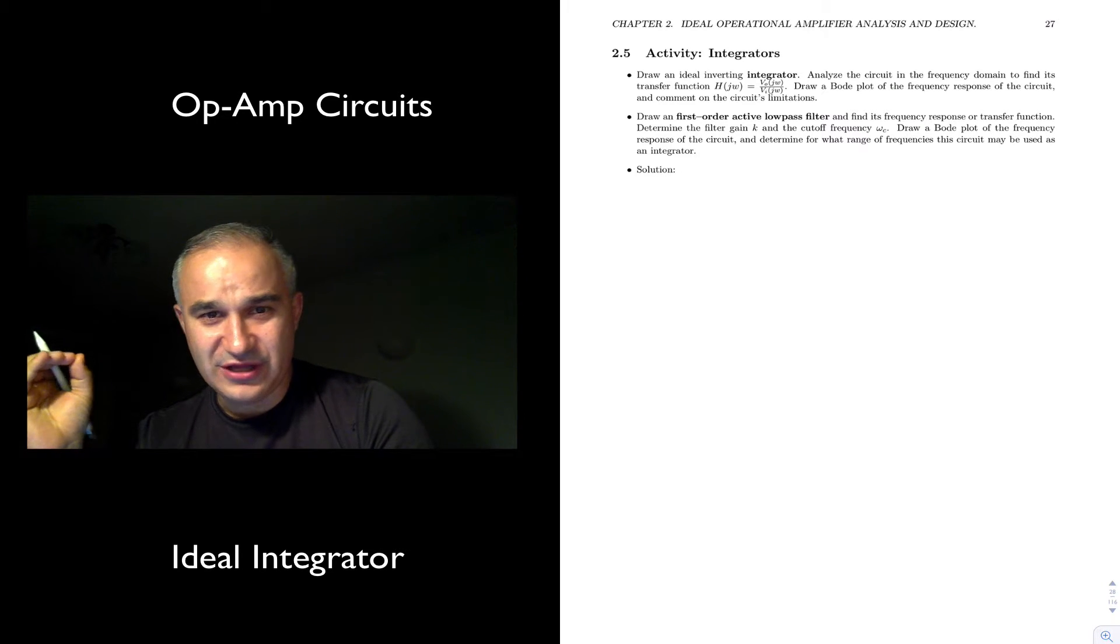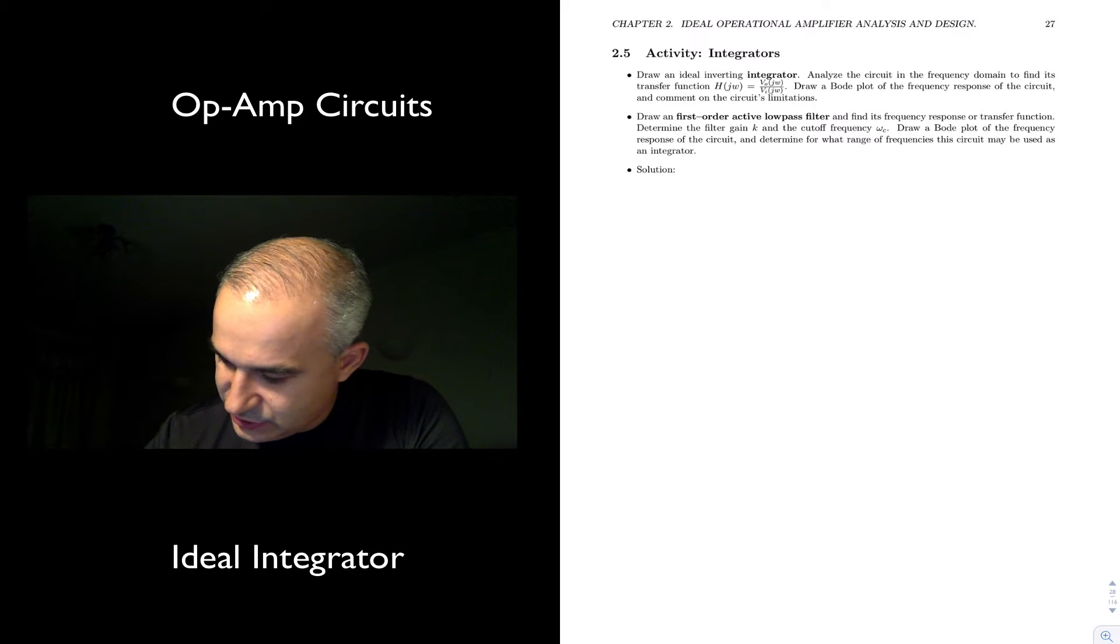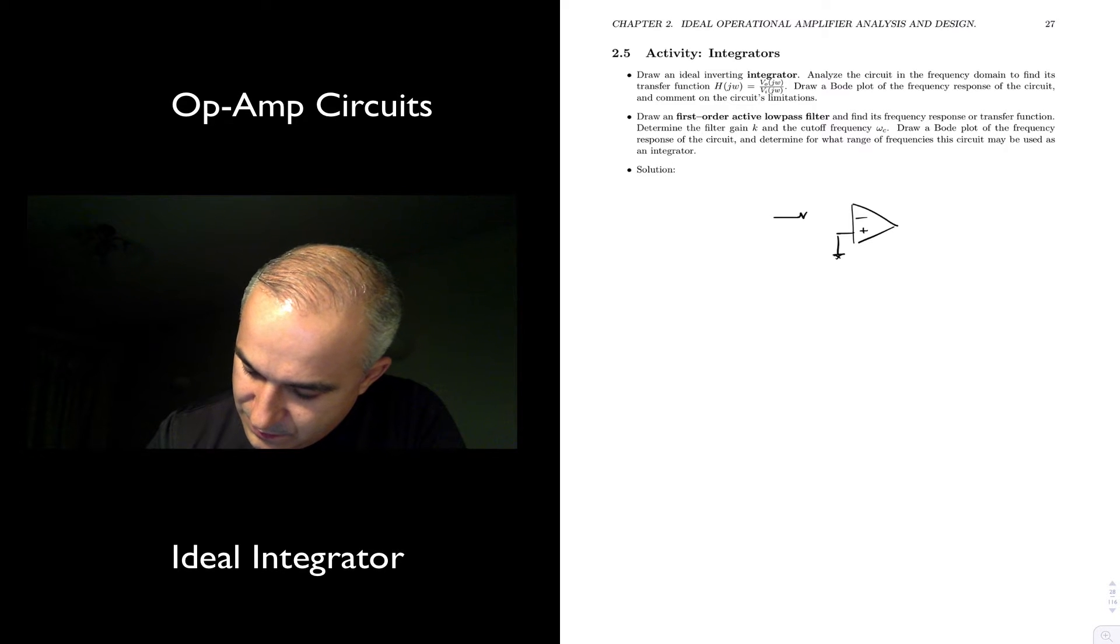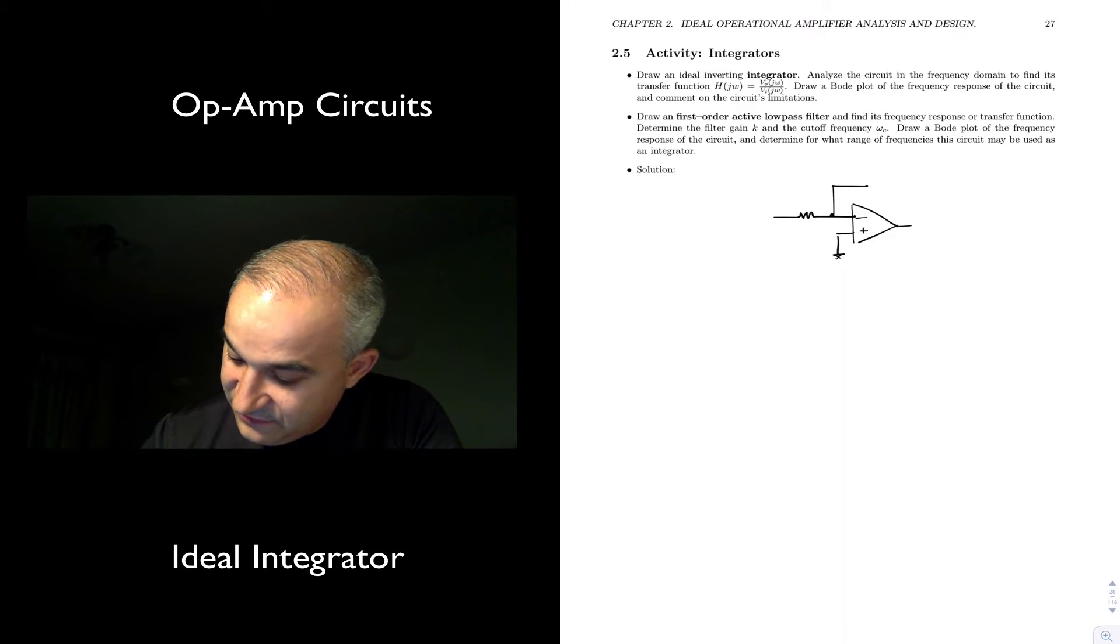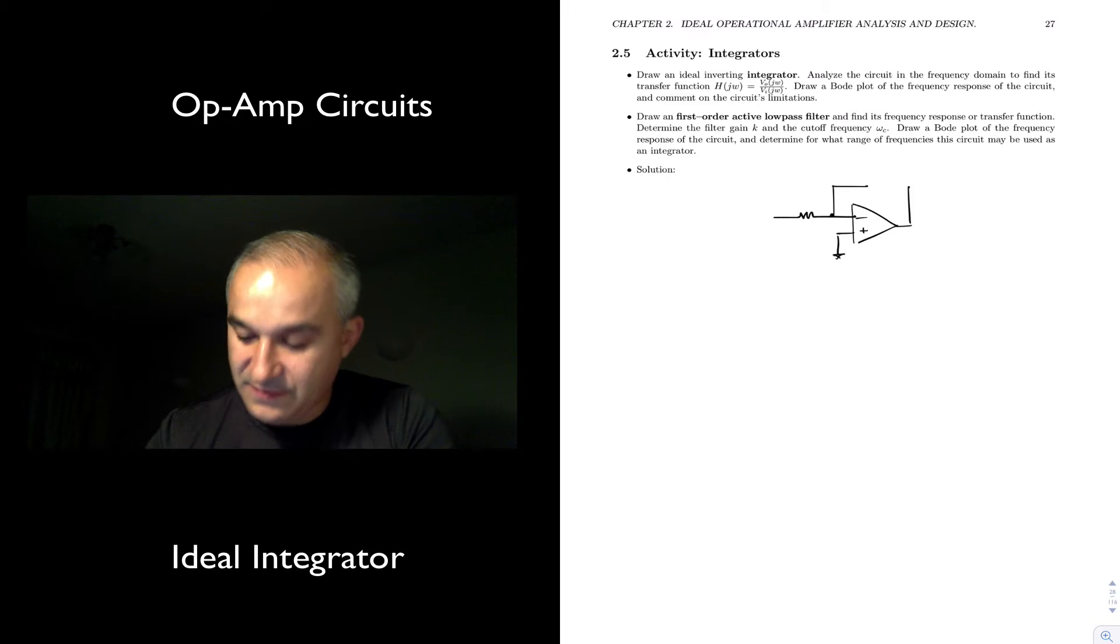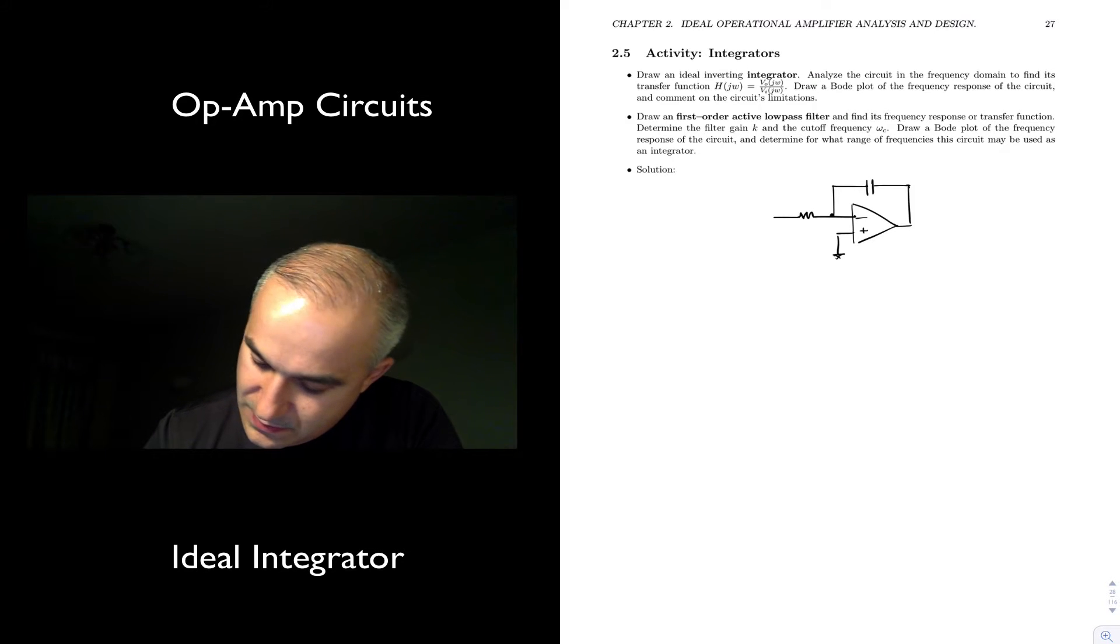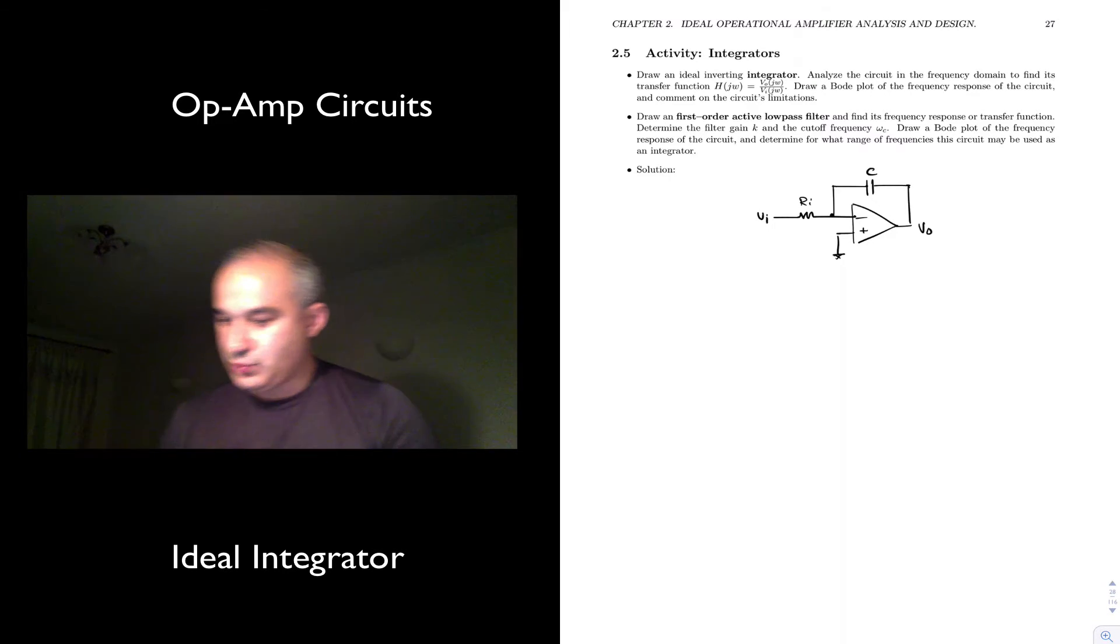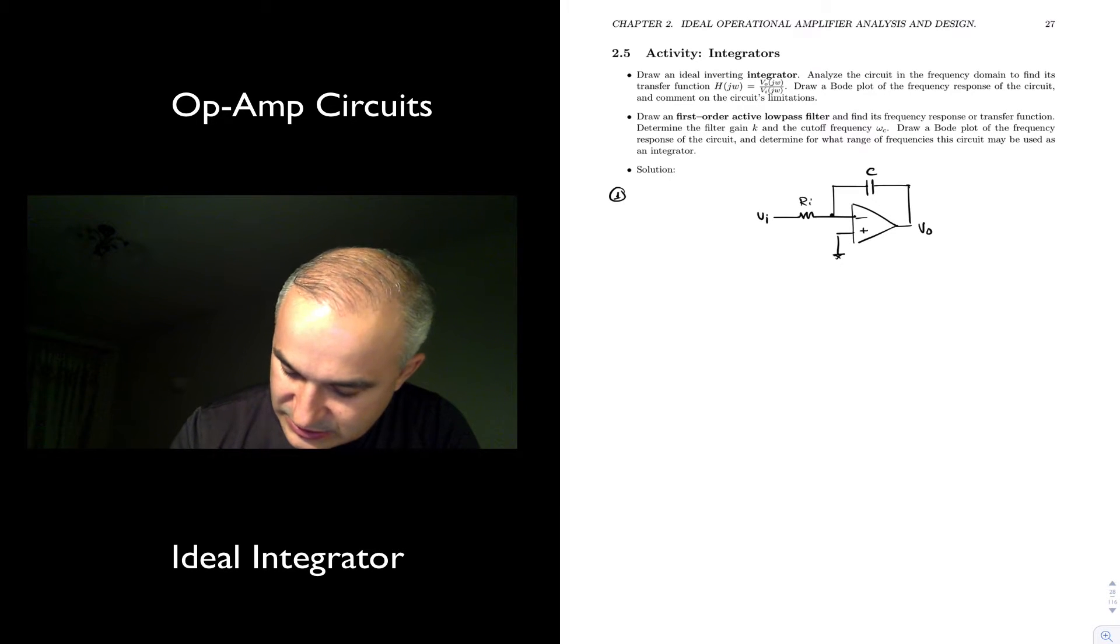Draw an ideal inverting integrator. In terms of circuit topology, we're using an operational amplifier in an inverting configuration, and in the feedback we are replacing the feedback resistor with a capacitor. I'm going to call this RA, and this is the capacitor. We have the voltage input and the voltage output. So as always, number one is the topology or skeleton.